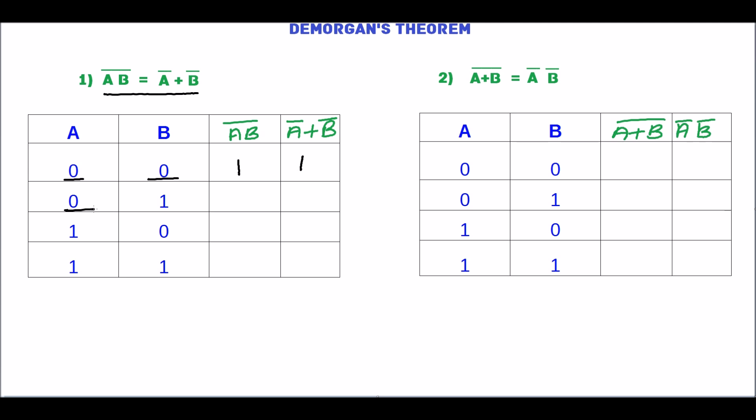For A=0, B=1: AB is 0, and 0 complement is 1. For A=0, B=1: A complement is 1 and B complement is 0, so 1 plus 0 equals 1.